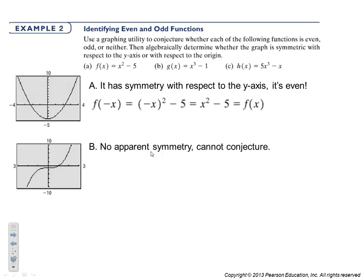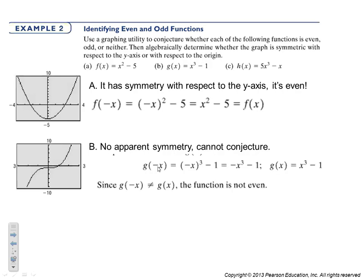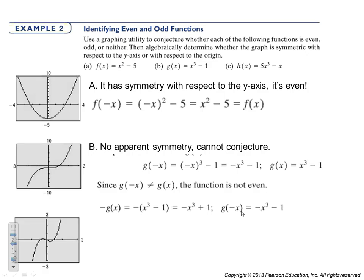For x cubed minus 1, there's no apparent symmetry in the graph so we can't make a conjecture. When we plug in negative x, we get negative x cubed minus 1. Since that's not equal to the original function, it's definitely not even. When we take the negative of the entire function we get negative x cubed plus 1, and that is not equal to the result when we substitute negative x, so it is not odd either. This function is neither.